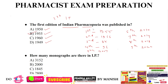What if I ask you that supplement to the first IP was published in? The supplement to first IP was published in 1960. Then the first IP was published in which language? Latin language. And Dr. B.N. Ghosh published the first IP.